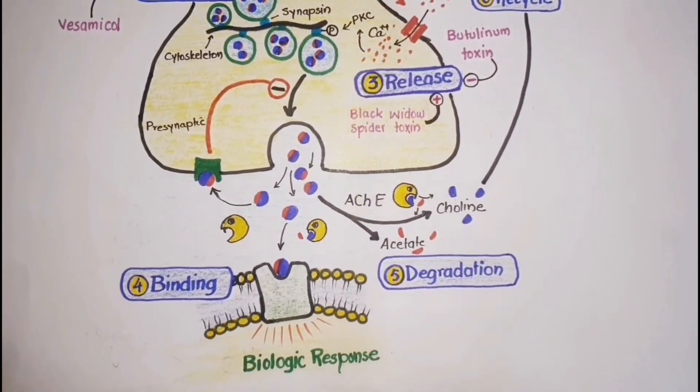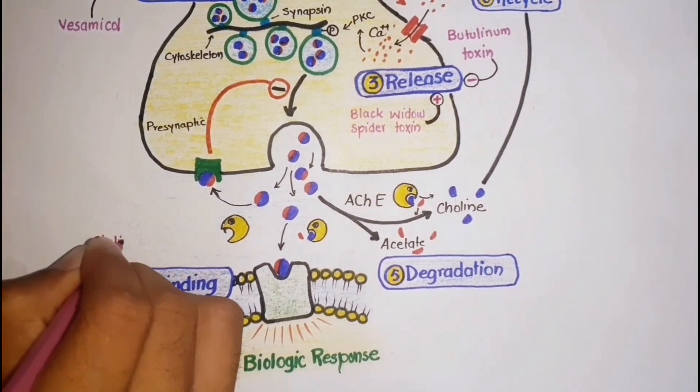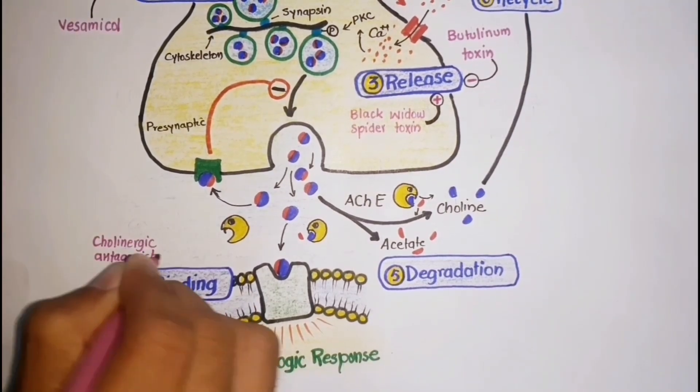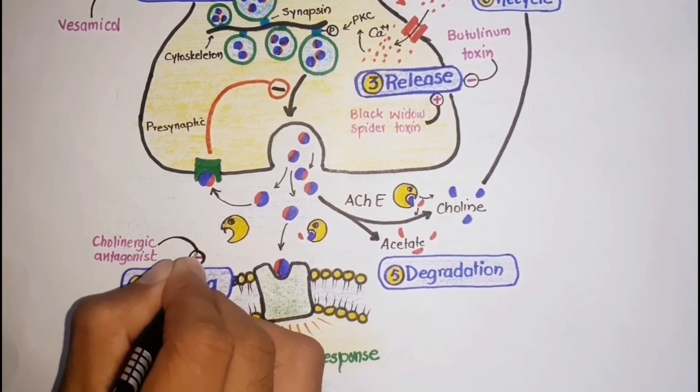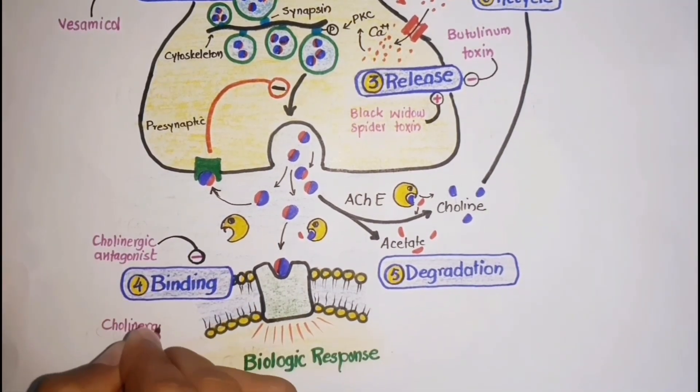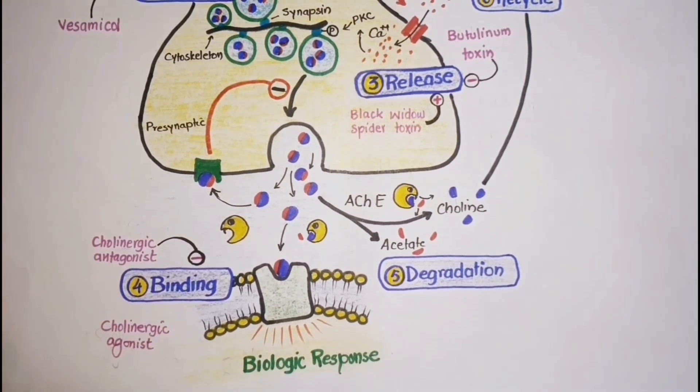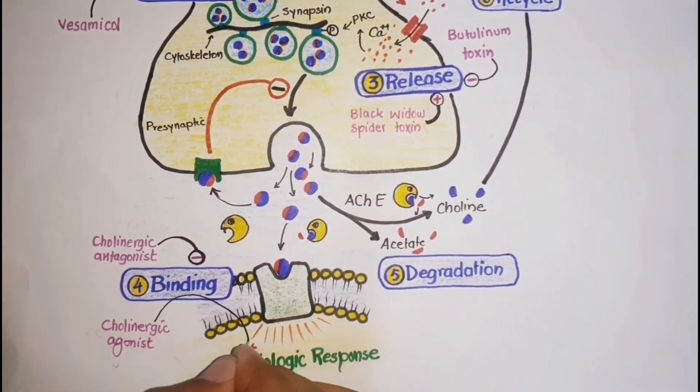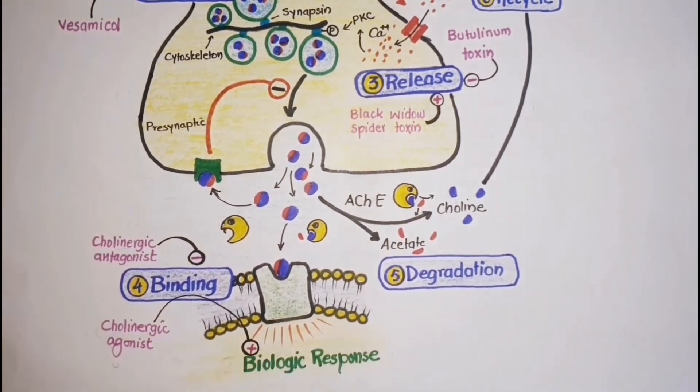Cholinergic antagonists inhibit the binding of acetylcholine to cholinergic receptors. In contrast, cholinergic agonists bind to these receptors and show actions like those of acetylcholine.